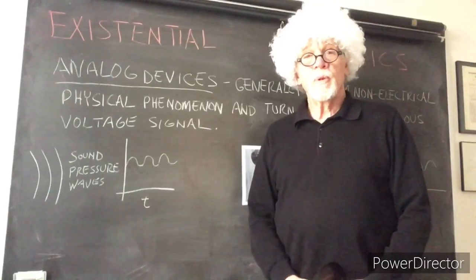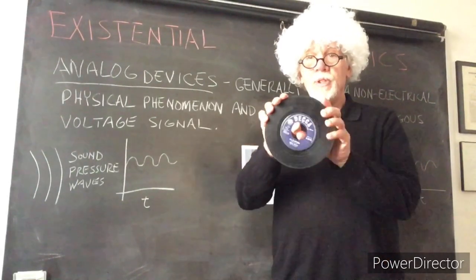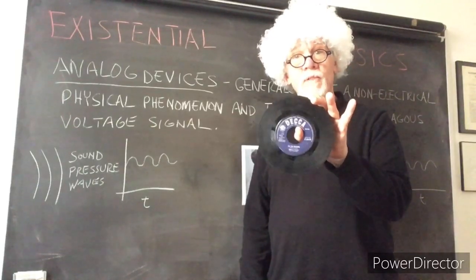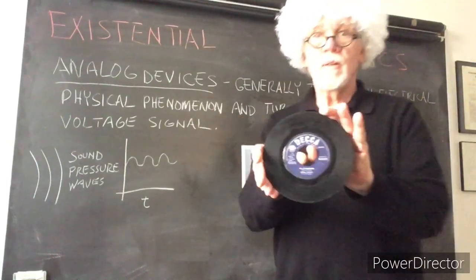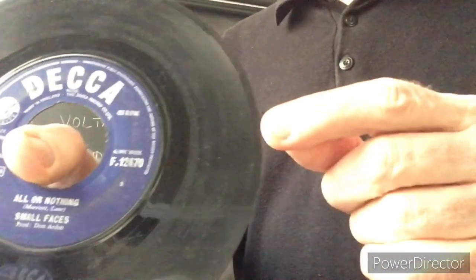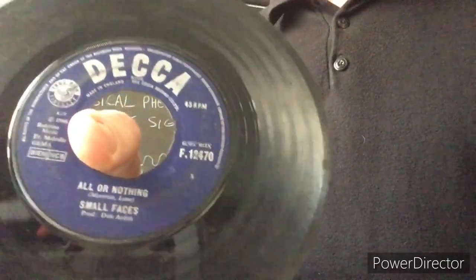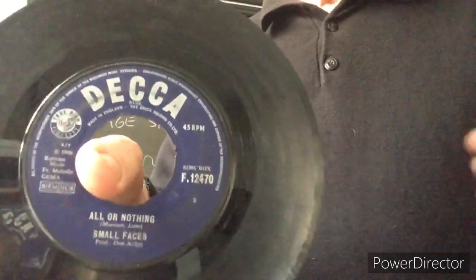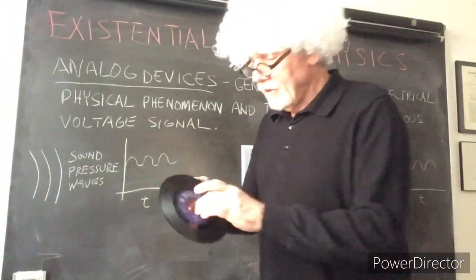The next analog device we want to talk about is a record player, and a record player is used to interpret the sound information contained on a vinyl record, so we can listen to what that information is. Now a record consists of a groove, a single groove, that keeps going around and around and getting closer and closer to the center. And when you reach the end, that's the end of whatever information is contained on there.